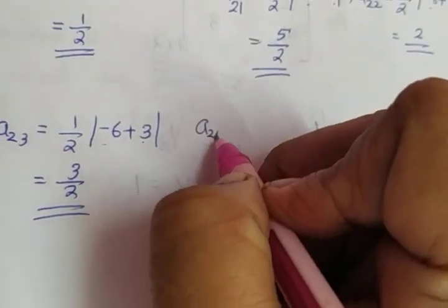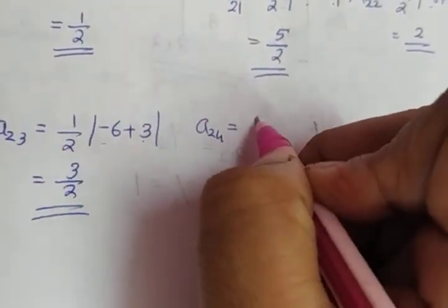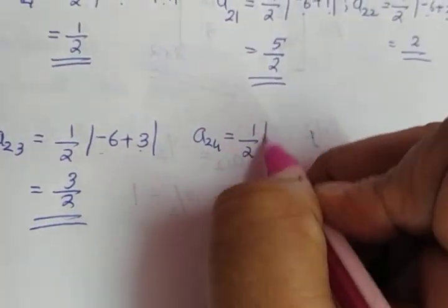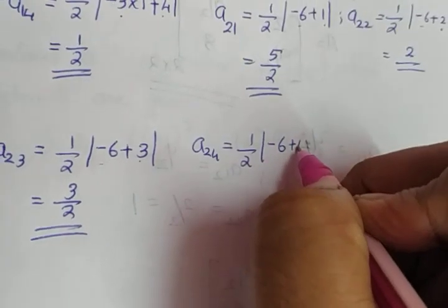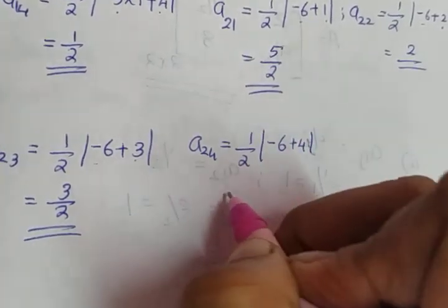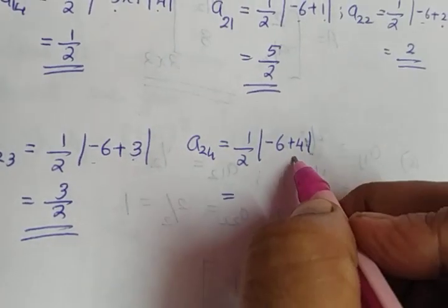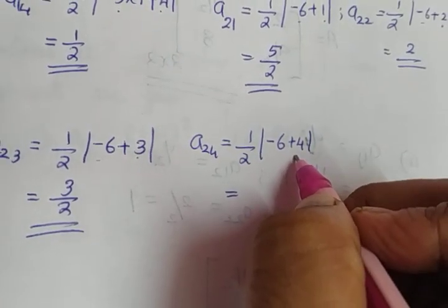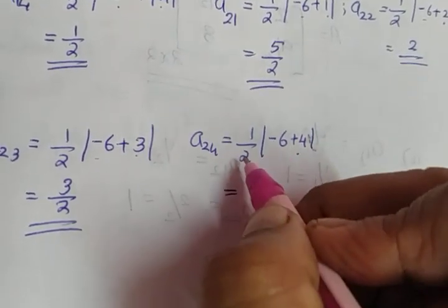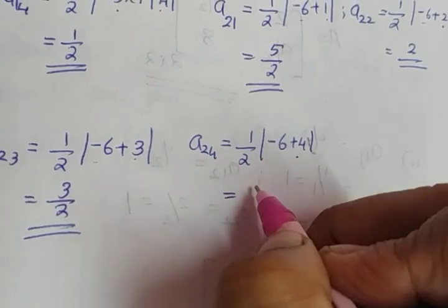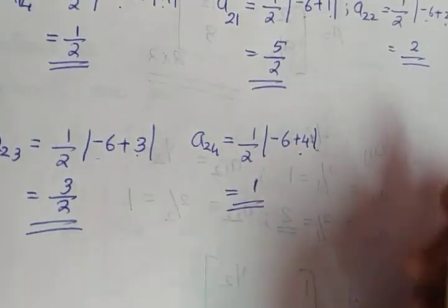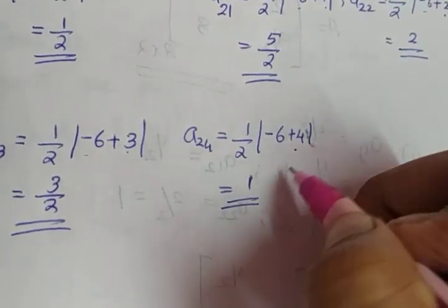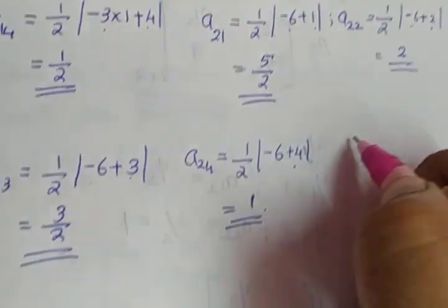A24 is equal to 1 by 2 into minus 6 plus 4. Minus 6 plus 4 gives you minus 2. Modulus is 2. Half of 2 is 1. This completes the second row.